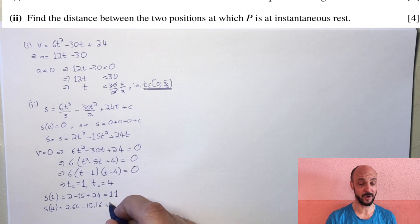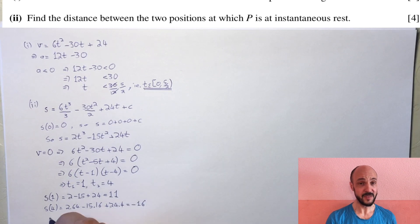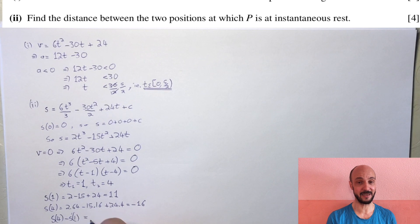Substituting 1 gives 2 minus 15 plus 24, which equals 11. The distance between minus 16 and 11 is 27, so we have an absolute distance of 27 metres.